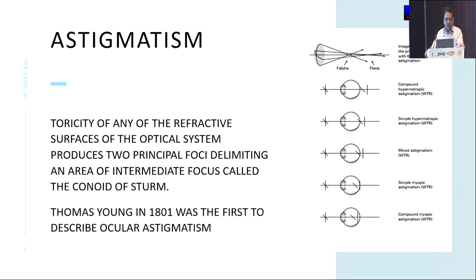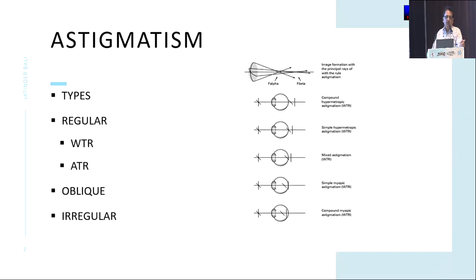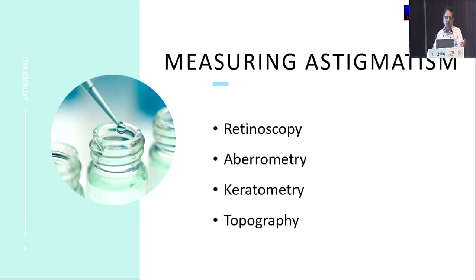It was Thomas Young in 1801 who described astigmatism. The toricity of any refractive surface of an optical system producing two principal foci, delimiting an area of intermediate focus, is called the conoid of Sturm. Astigmatism can be regular, oblique, or irregular, and regular can be with the rule or against the rule.